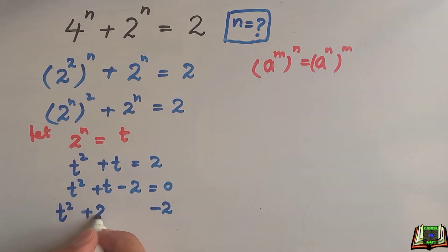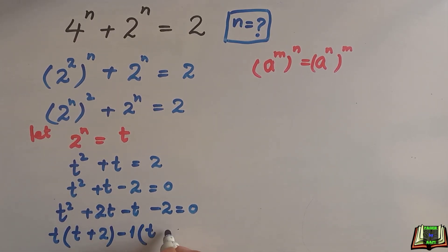So plus 2t minus t is equal to 0. From here we will take t as common inside the parenthesis t plus 2, from here we will take minus 1 as common t plus 2 inside the parenthesis is equal to 0.